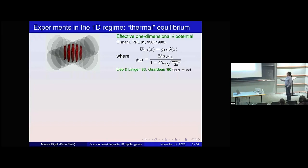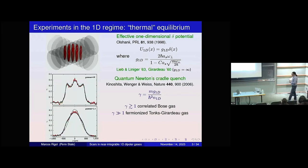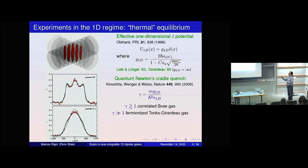When the coupling goes to infinity, the model is even more integrable in a sense—it reduces to the Tonks-Girardeau model of non-interacting bosons. Now in experiments the gas is trapped, which is why we need to talk about near-integrability. The fact that these gases are really near-integrable was beautifully seen by Dave Weiss in the quantum Newton's cradle quench experiment mentioned earlier. They apply laser pulses to put all bosons in a superposition of plus and minus momentum of that lattice and let them evolve.